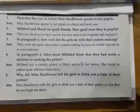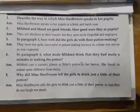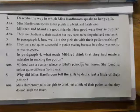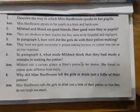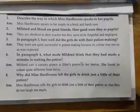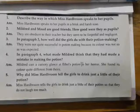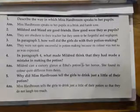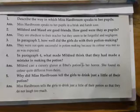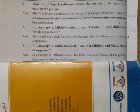Question three: In paragraph three, how well did the girls do with their potion making? They were not quite successful in potion making because its color was not as expected. Question four: In paragraph four, what made Mildred think that they had made a mistake in making the potion? Mildred cast a cursory glance at Ethel's potion. To her horror she found its color quite different from theirs. Question five: Why did Miss Hardbroom tell the girls to drink just a little of their potion? Miss Hardbroom told the girls to drink just a little of their potion so that they do not laugh too much.